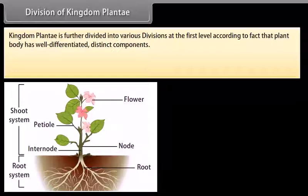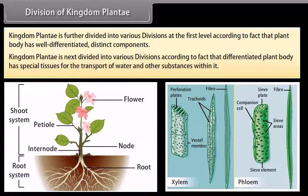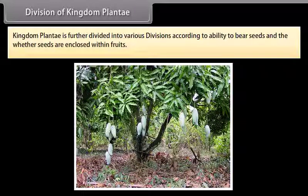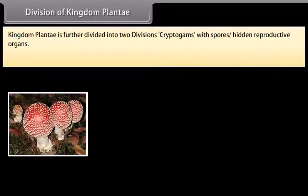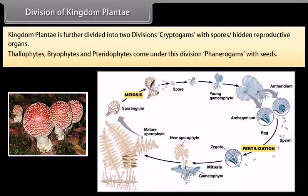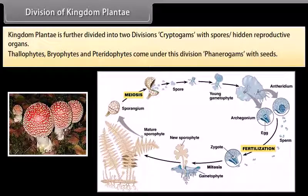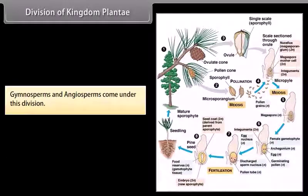Division of kingdom Plantae: Kingdom Plantae is further divided into various divisions according to whether the plant body has well-differentiated distinct components, whether the differentiated plant body has special tissues for the transport of water and other substances, and whether it has the ability to bear seeds and whether seeds are enclosed within fruits. Kingdom Plantae is divided into two divisions: Cryptogamae (with spores and hidden reproductive organs), under which Thallophytes and Pteridophytes come; and Phanerogamae (with seeds), under which Gymnosperms and Angiosperms come.